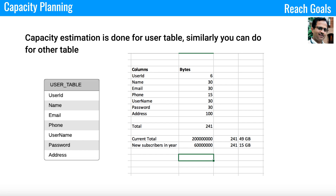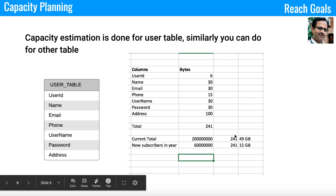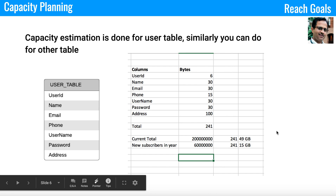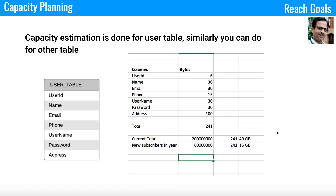For the user table I took all fields — user ID, name, email, phone, username, password, address — and calculated each field's byte size, totaling about 241 bytes per record. Spotify currently has 200 million users, so 200 million times 241 bytes is around 49 GB. Spotify adds about 60 million users per quarter, which at 241 bytes each comes to 15 GB per quarter. From this you can calculate capacity requirements for one year or five years.